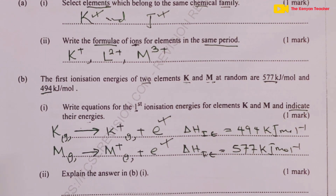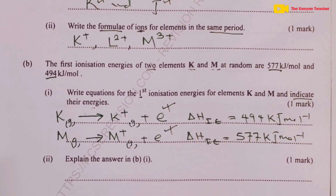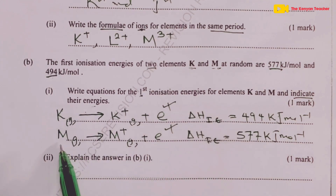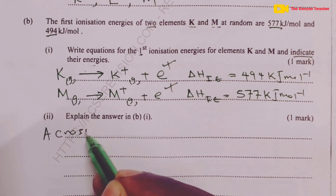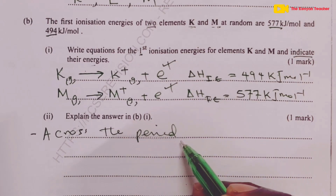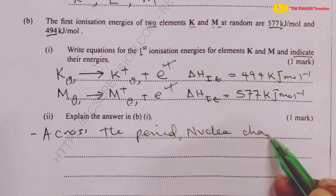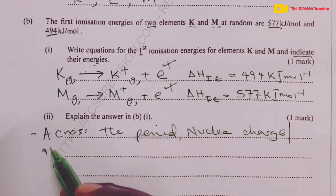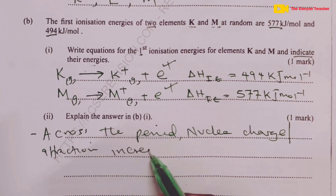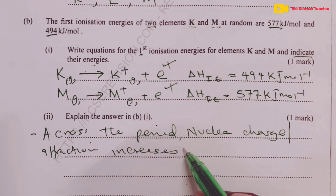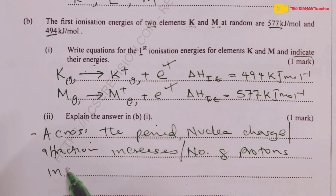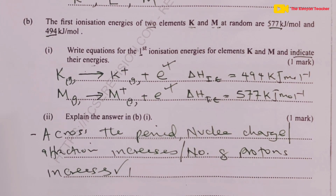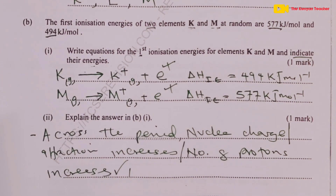For Part B, Roman 2, we explain our answer. Why is the ionization energy of M higher than that of K? Across Period 3, nuclear charge — or nuclear attraction — increases, and the number of protons increases. That gives us the one mark for the reason why the ionization energy of M is higher than that of K.